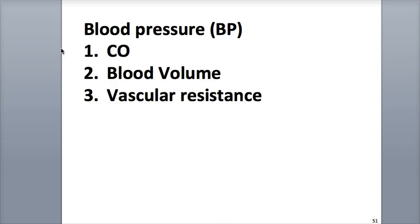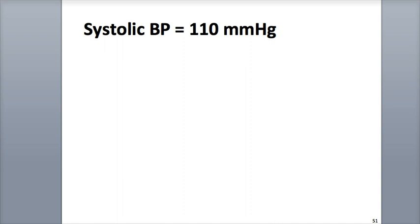Blood pressure is the result of the interactions of cardiac output, blood volume, and vascular resistance. The highest blood pressure is located in the aorta and large systemic arteries. In a young adult at rest, the systolic blood pressure — the highest arterial blood pressure during ventricular contraction, or systole — is around 110 millimeters of mercury.